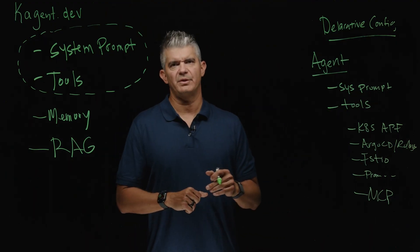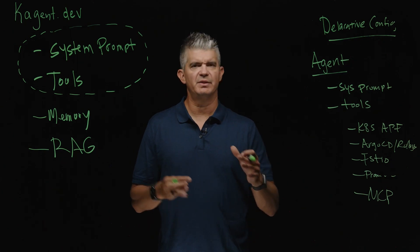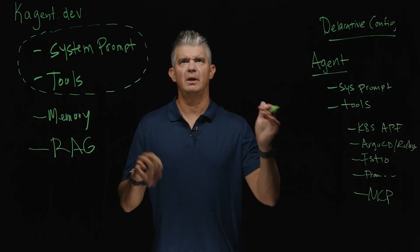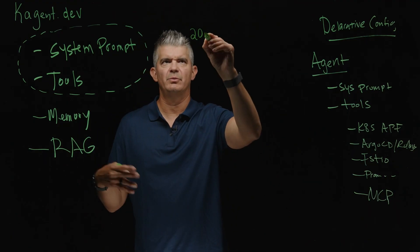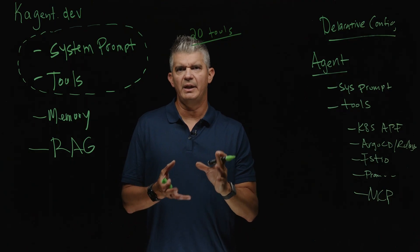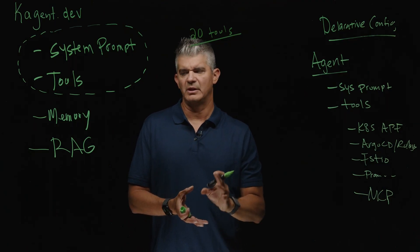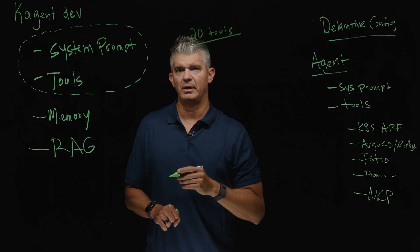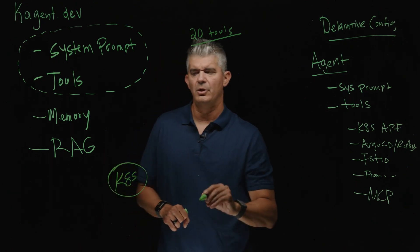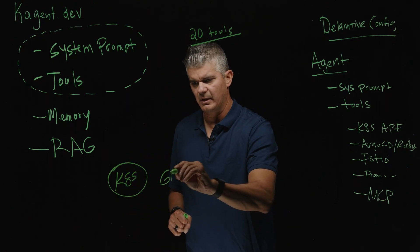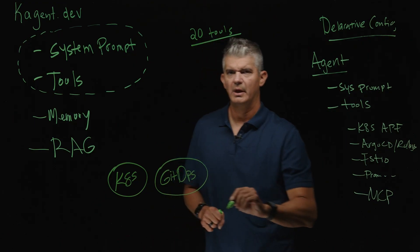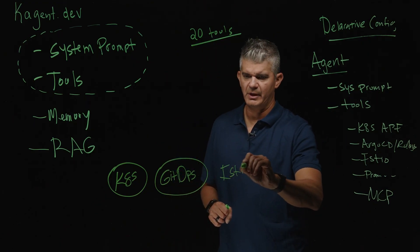One thing we've noticed is that when you're building agents, you want to keep the system prompt very focused and tight, and give it access to maybe 20 to 25 tools. So what you end up doing is building agents that are very focused on solving specific tasks. For example, if you install kagent, you'll see we have a Kubernetes-specific agent. You could also build one that understands and interacts with GitHub but understands the concepts around GitOps. We also have an Istio agent out of the box.